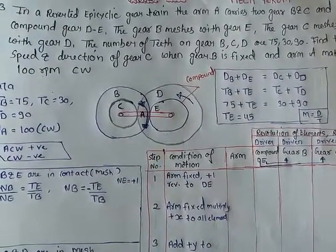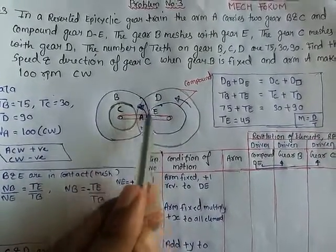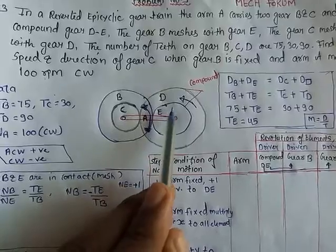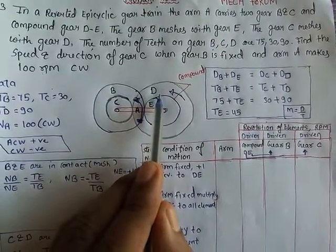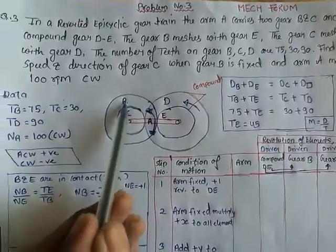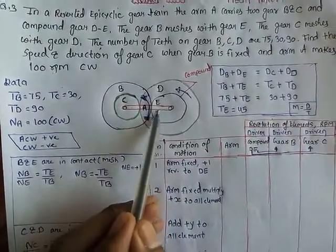This is the condition that is given. Now we have four gears B, C, D, E. It's a compound gear. If two components are compounded, then D has some RPM and E has some RPM. We know the number of teeth for B, C and D, but E, what is the number of teeth? We don't know.